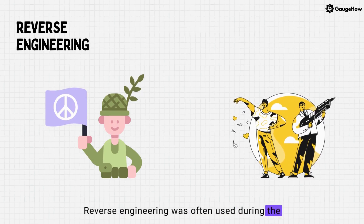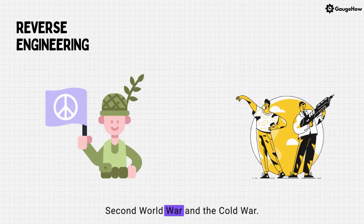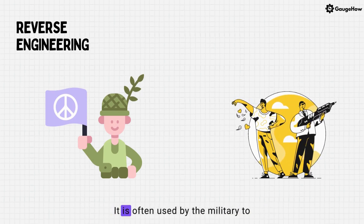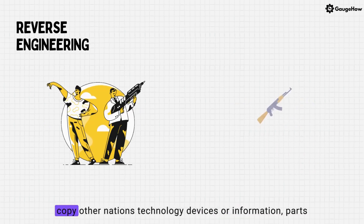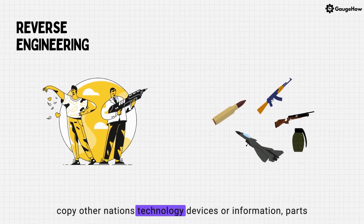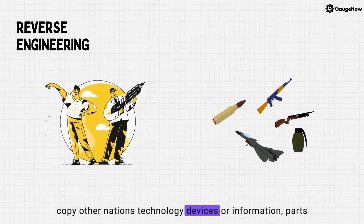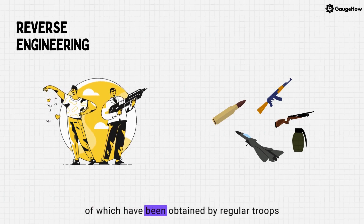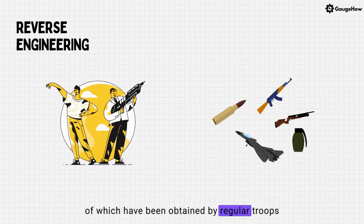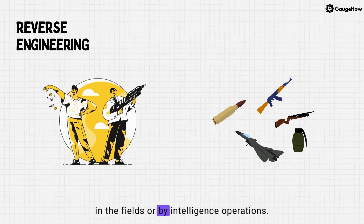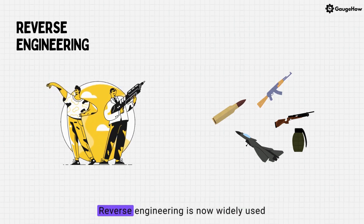Reverse engineering was often used during the Second World War and the Cold War. It is often used by the military to copy other nations' technology, devices or information, parts of which have been obtained by regular troops in the fields or by intelligence operations.